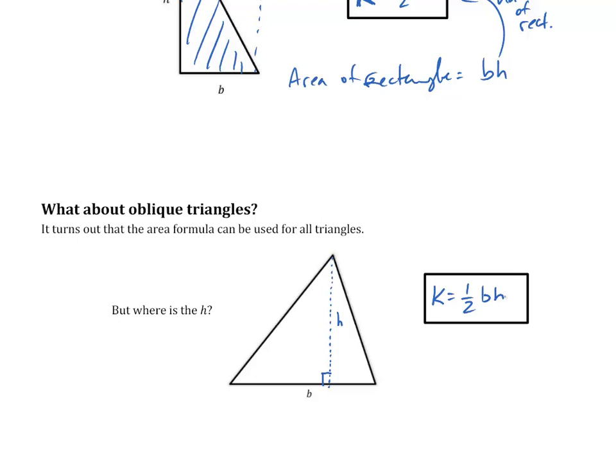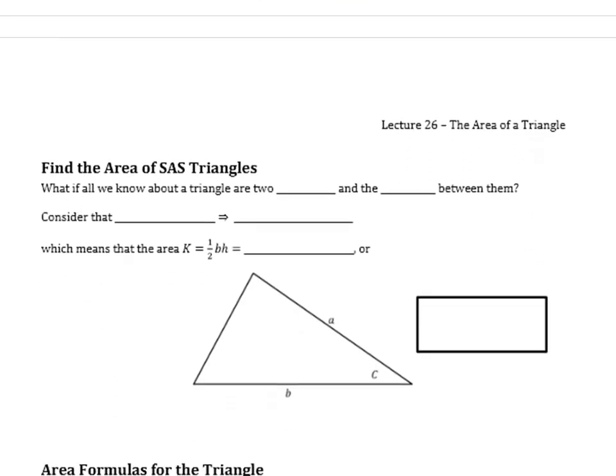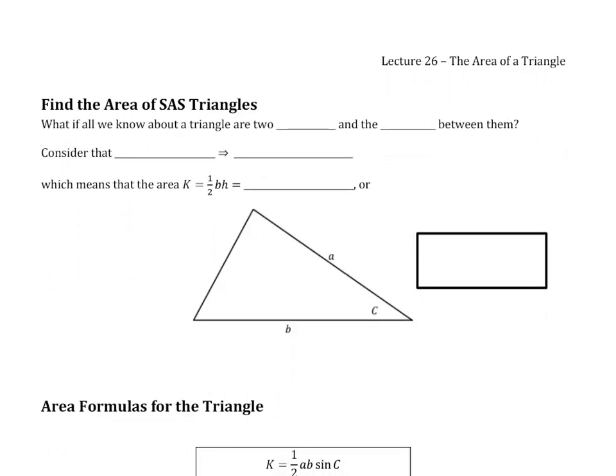With that now being said, what we will do to figure out the area of a triangle whenever we don't have the height but we have lengths of angles, we simply have to use our knowledge of trigonometric functions to find that H. So what if all we know are two sides and the angle between them? If I were to drop this side straight down and call it H, we know that sine of angle C is equal to H over A, which then means that the area K is actually equal to one-half times A times B times the sine of the angle between them.